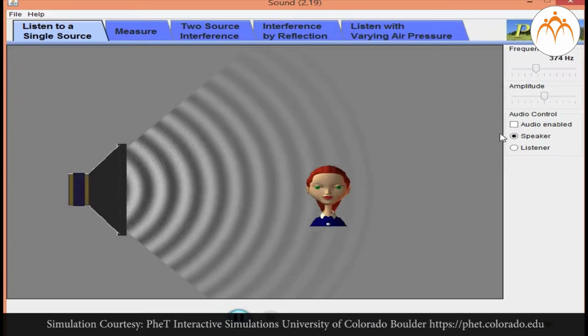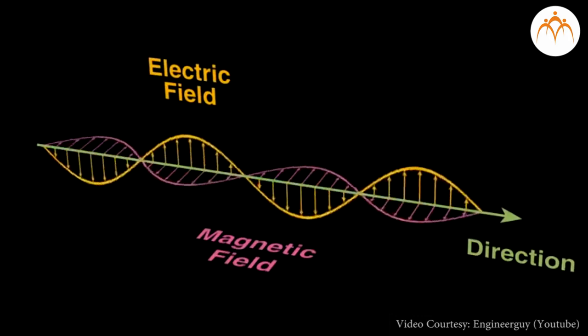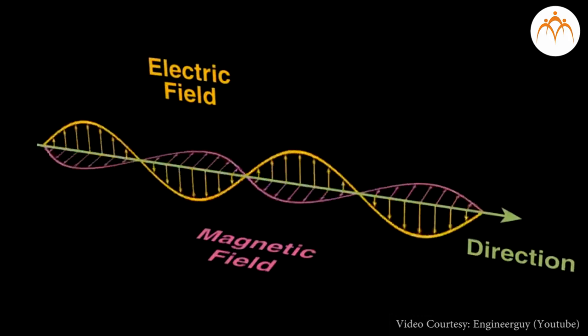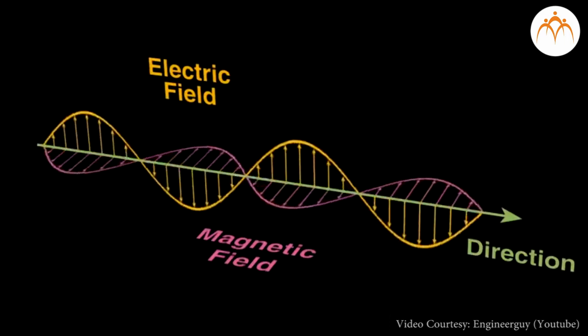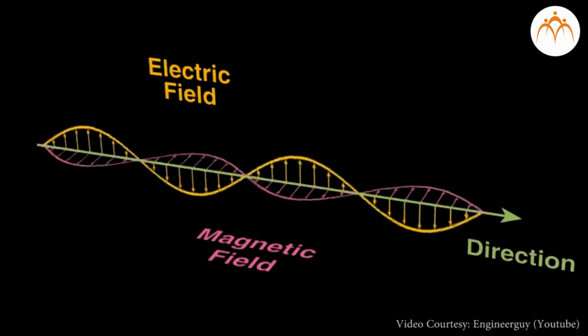Periodic motion is important in the study of sound, light, and other waves. Large chunks of physics are devoted to this kind of repetitive motion. Doing the same thing over and over and going nowhere is pretty important.